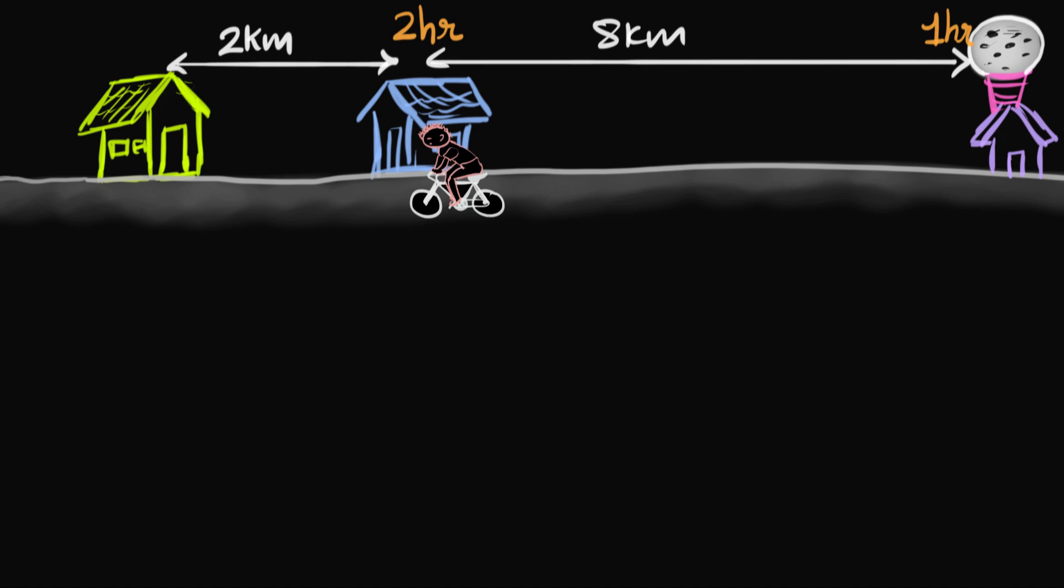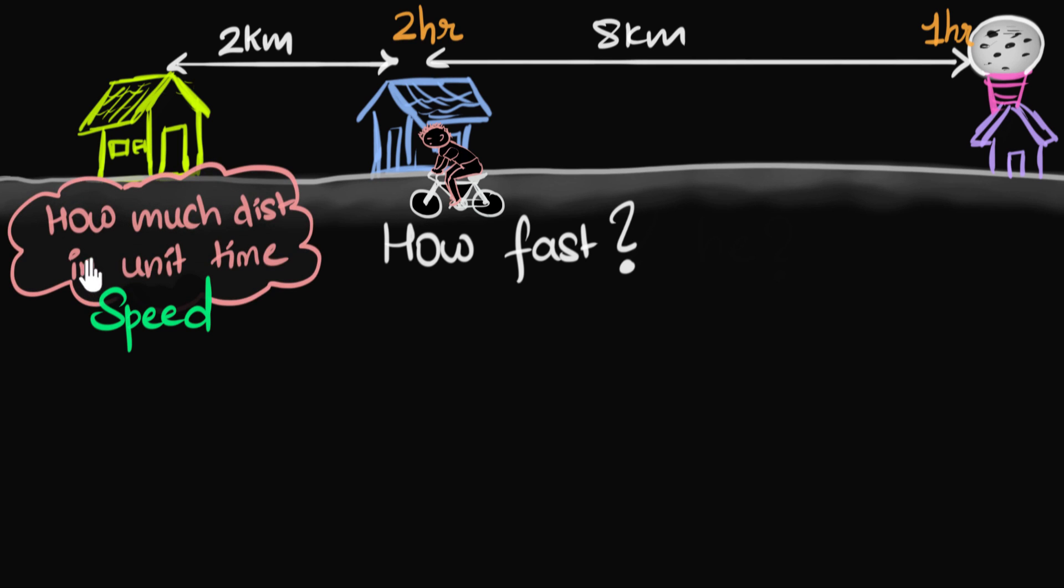Now the big question that we want to try and answer in this video is, how fast was Satra over this entire journey? Now it turns out that there are two ways to answer this question. One way is to talk about his speed. You kind of know what speed is. It's a measure of how fast somebody is moving. In other words, it's a measure of how much distance something is traveling in unit time. Unit time means in one hour, or one second, or one minute.